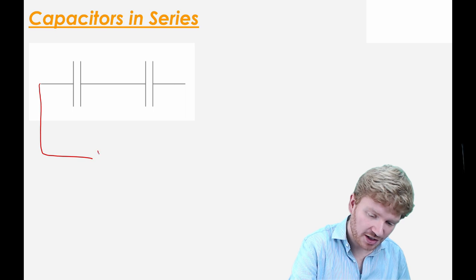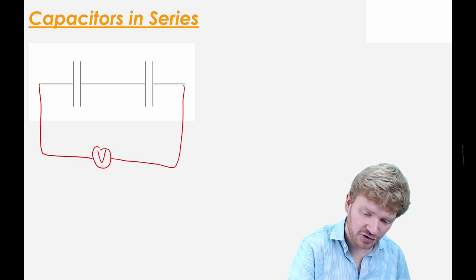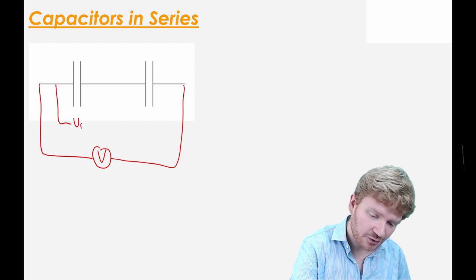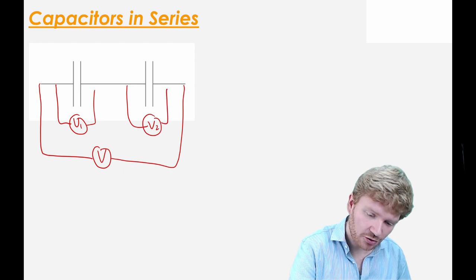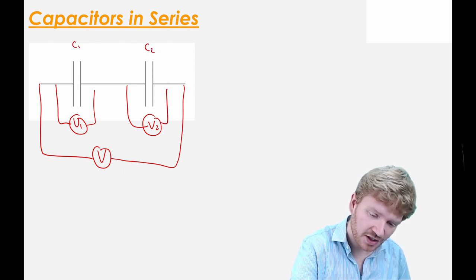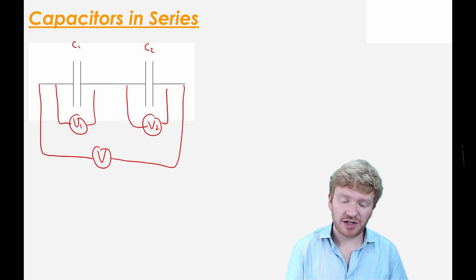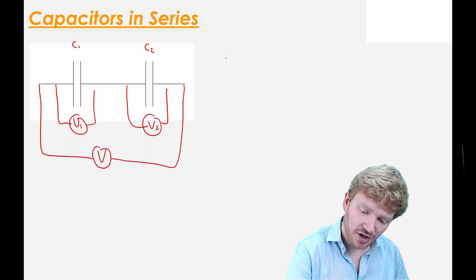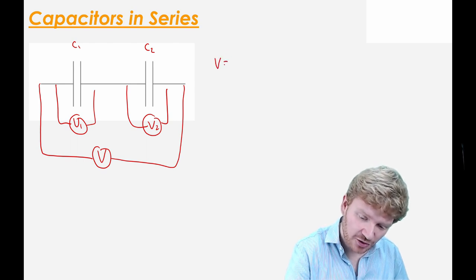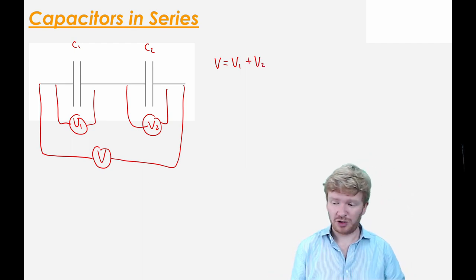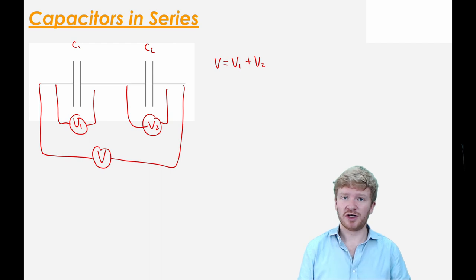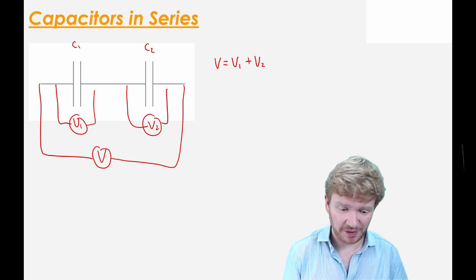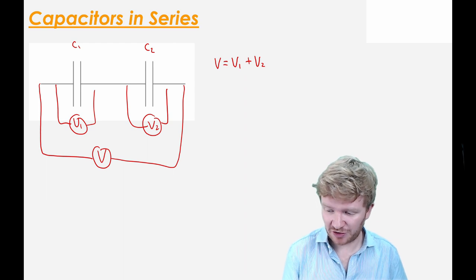If I think of them in series, I can go through a similar exercise. I'm going to apply a voltage V to them, and then I'll have V1 across C1 and V2 across C2. Go back to Kirchhoff's second law — here I have a complete loop, so the total voltage is equal to the voltage across the first plus the voltage across the second. The voltage in the two capacitors is no longer the same; the voltage is split, a bit like a potential divider.